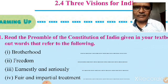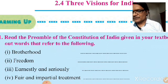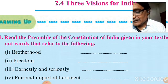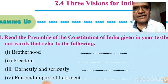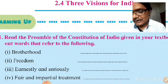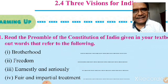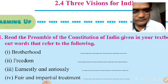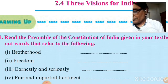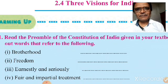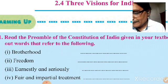Brotherhood — the word used in the constitution's preamble is 'Fraternity': F-R-A-T-E-R-N-I-T-Y. Please write down the correct word. Freedom is 'Liberty': L-I-B-E-R-T-Y.